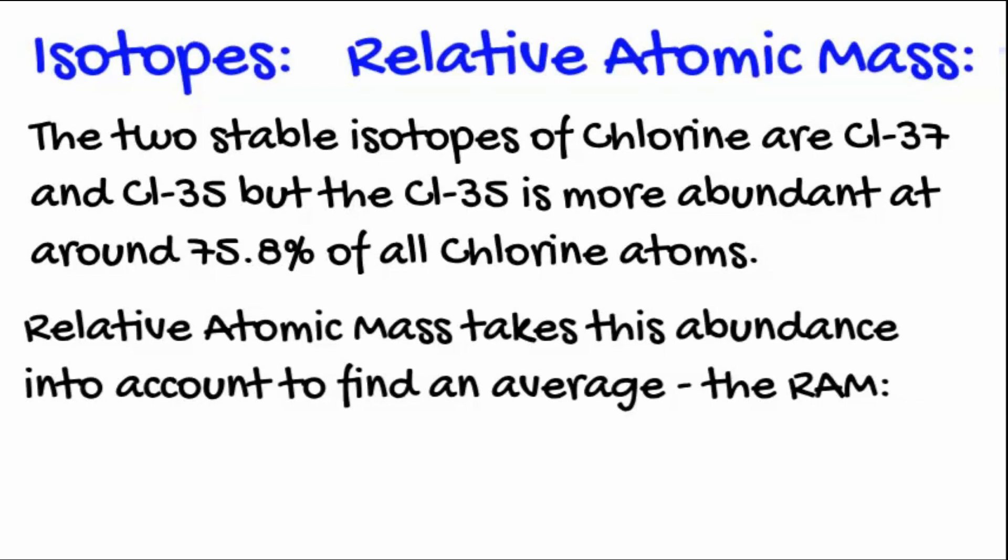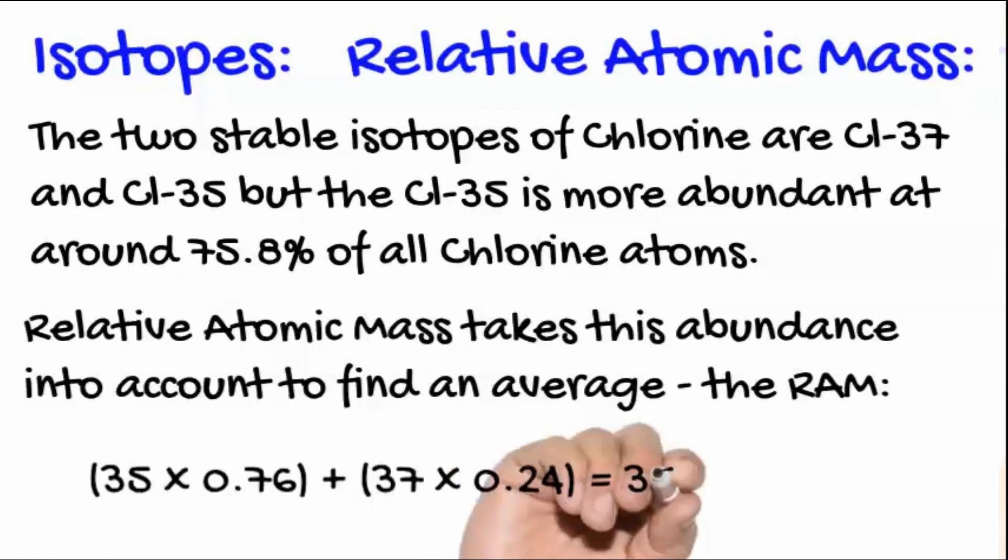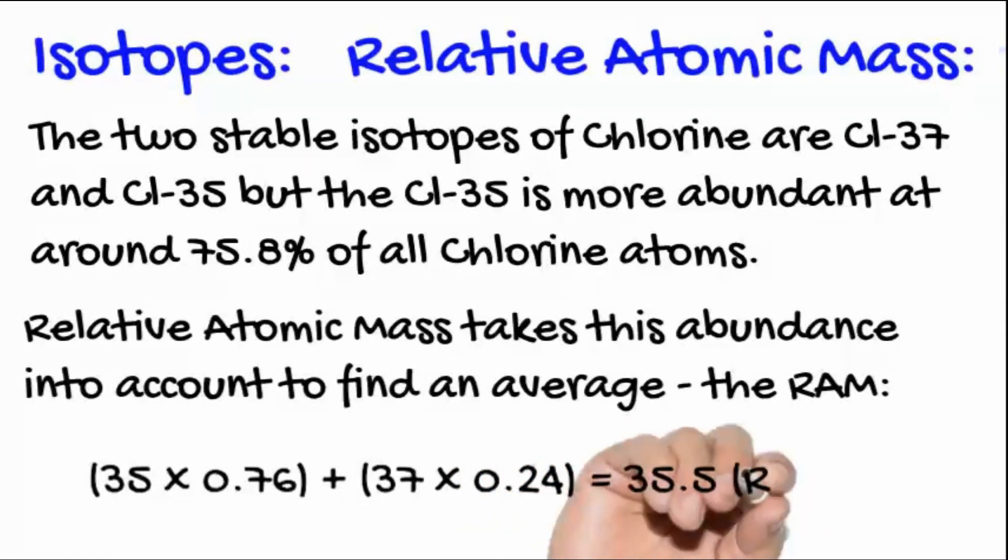The relative mass, or relative atomic mass, takes this abundance into account to find an average. A mass of 35, with an abundance of 76%, is added to a mass of 37, with an abundance of 24%, giving a relative atomic mass of 35.5.